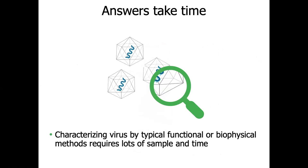Current techniques for answering these stability questions take time or are low throughput. Functional assays require highly skilled personnel working through a timely cell-based assay. As this field grows more and more, there really is a need for something to give you stability answers in a much faster, high-throughput way. Additionally, many of the methods and techniques that we are using nowadays were not necessarily made for this specific purpose, and we don't have the right tool for the right job.